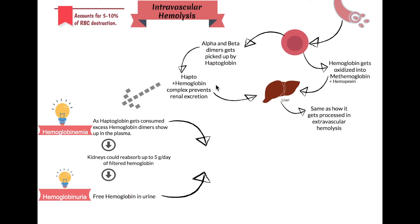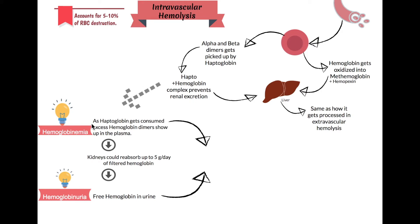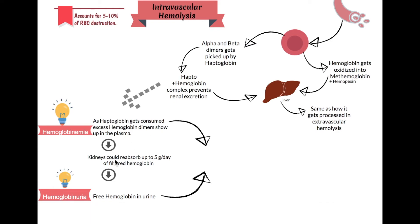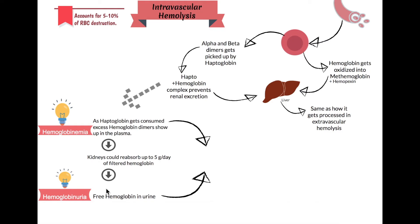Let's focus on the haptoglobin-haptohemoglobin complex. As haptoglobin gets consumed by the alpha and beta dimers floating around, eventually all the haptoglobin gets used up. Then the excess hemoglobin shows up in your plasma — that's called hemoglobinemia. The kidneys can reabsorb that up to five grams per day, but after that, it shows up in your urine, which is called hemoglobinuria.